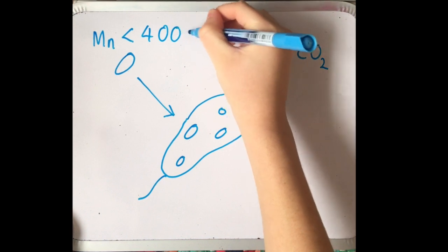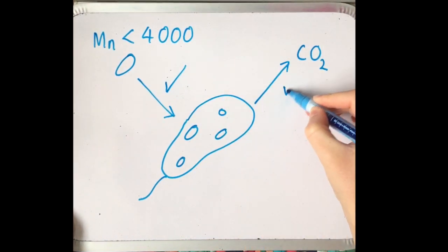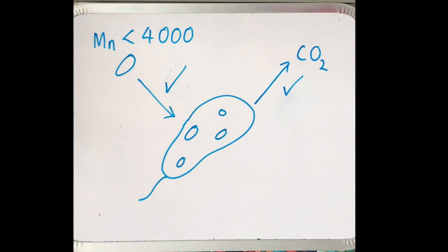Mn is the average molar mass of the polymer. The average microorganism is able to assimilate a polymer with a molar mass of less than 4000.